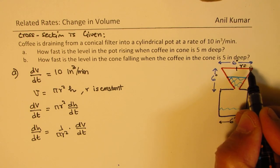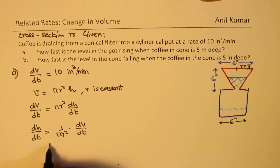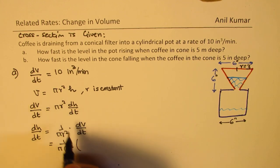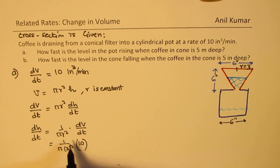Now r is fixed. r is, for us, r equals 3, half of 6. So we can just substitute these values. We get 1/π times 3 squared, and dV/dt is 10. The answers will be in inches per minute.